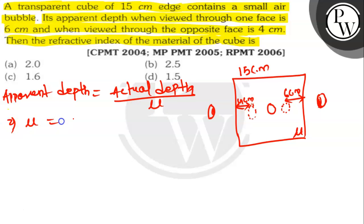So what is the mu here? If we have to find out, we have to find out the refractive index here. Mu. So actual depth upon apparent depth.